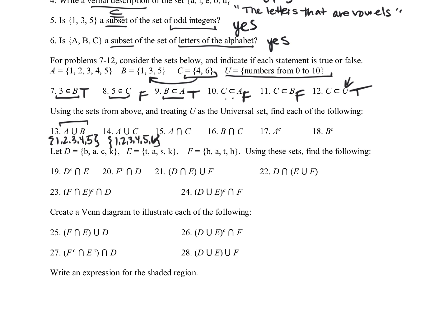For fifteen, we want the intersection. So what is in both A and C? The only element that is in both is four. So the intersection is the number four. B intersected with C, they have nothing in common. So that's going to be the empty set.